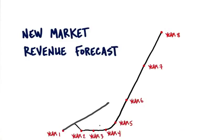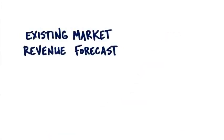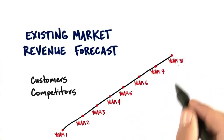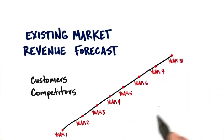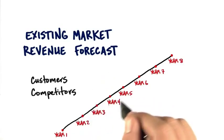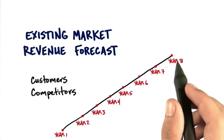We want to be careful about what our sales curve looks like. In an existing market — and remember, in an existing market there are customers and there are competitors — we have a better or higher-performance product on axes that customers have defined. Our job in an existing market is simply, year after year, to execute pristinely and take share away from the incumbents. Our sales curve in an existing market should literally be one of taking share.